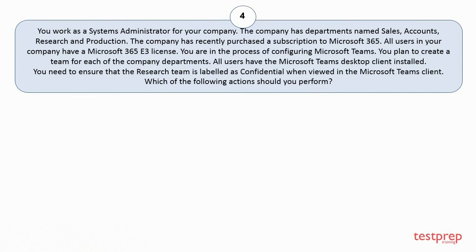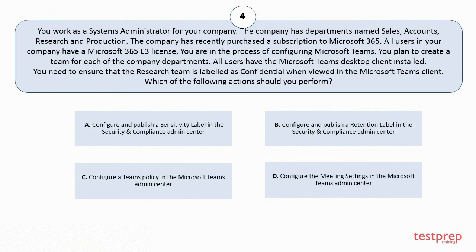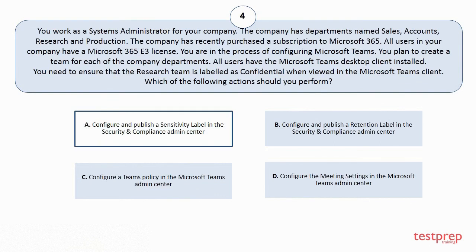Question 4. You work as a systems administrator for your company. The company has departments named Sales, Accounts, Research, and Production. The company has recently purchased a subscription to Microsoft 365. All users in your company have a Microsoft 365 v3 license. You are in the process of configuring Microsoft Teams. You plan to create a team for each of the company departments. All users have the Microsoft Teams desktop client installed. You need to ensure that the research team is labeled as confidential when viewed in the Microsoft Teams client. Which of the following actions should you perform? Your options are: A. Configure and publish a sensitivity label in the Security and Compliance Admin Center. B. Configure and publish a retention label in the Security and Compliance Admin Center. C. Configure a team's policy in the Microsoft Teams Admin Center. D. Configure the meeting settings in the Microsoft Teams Admin Center. The correct answer is Option A.